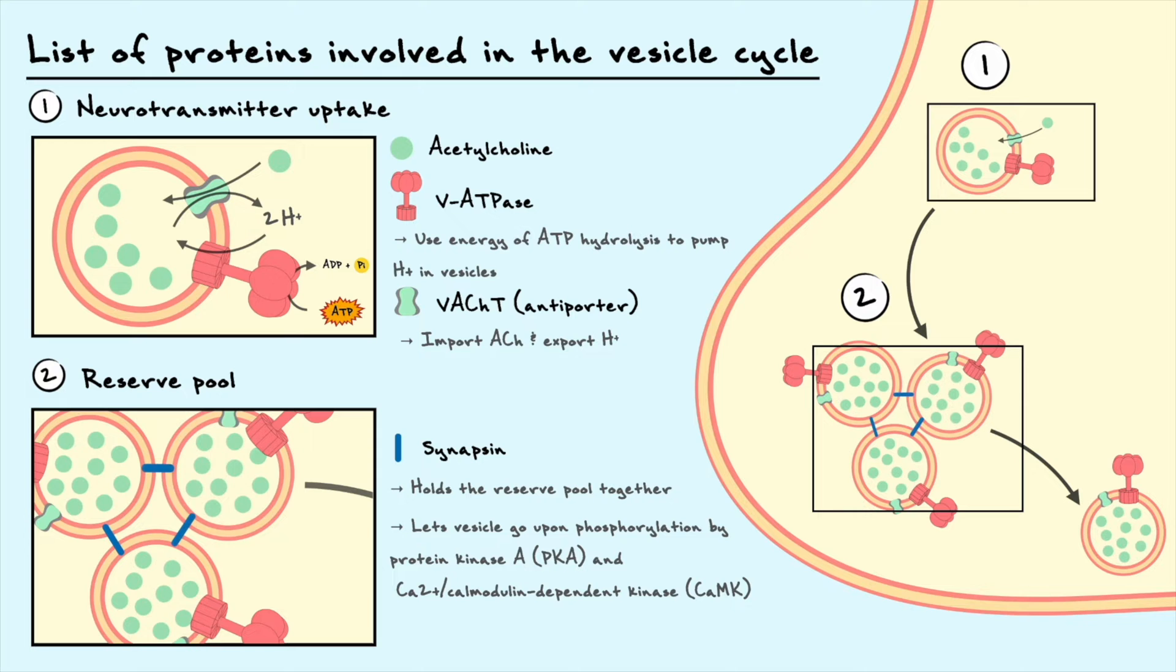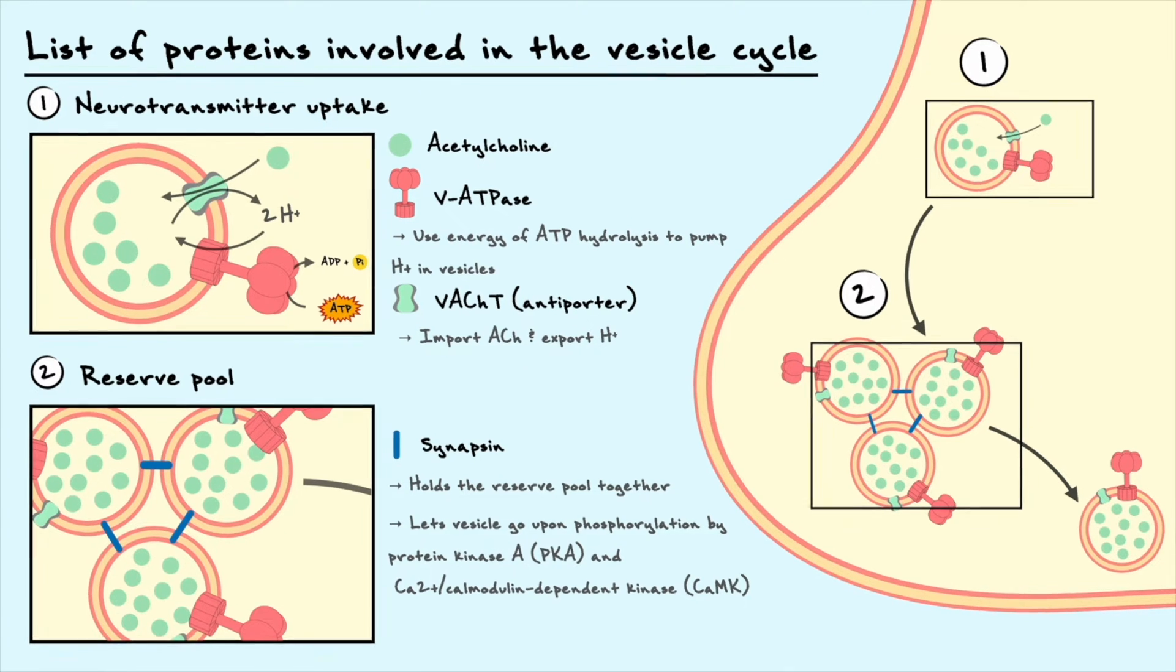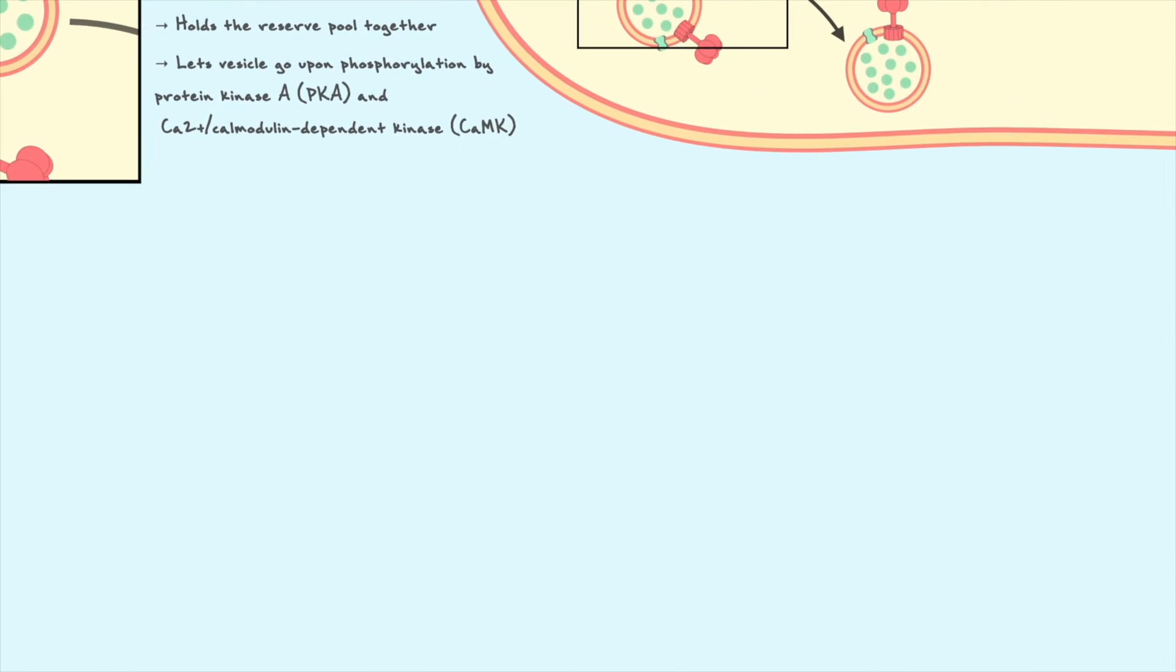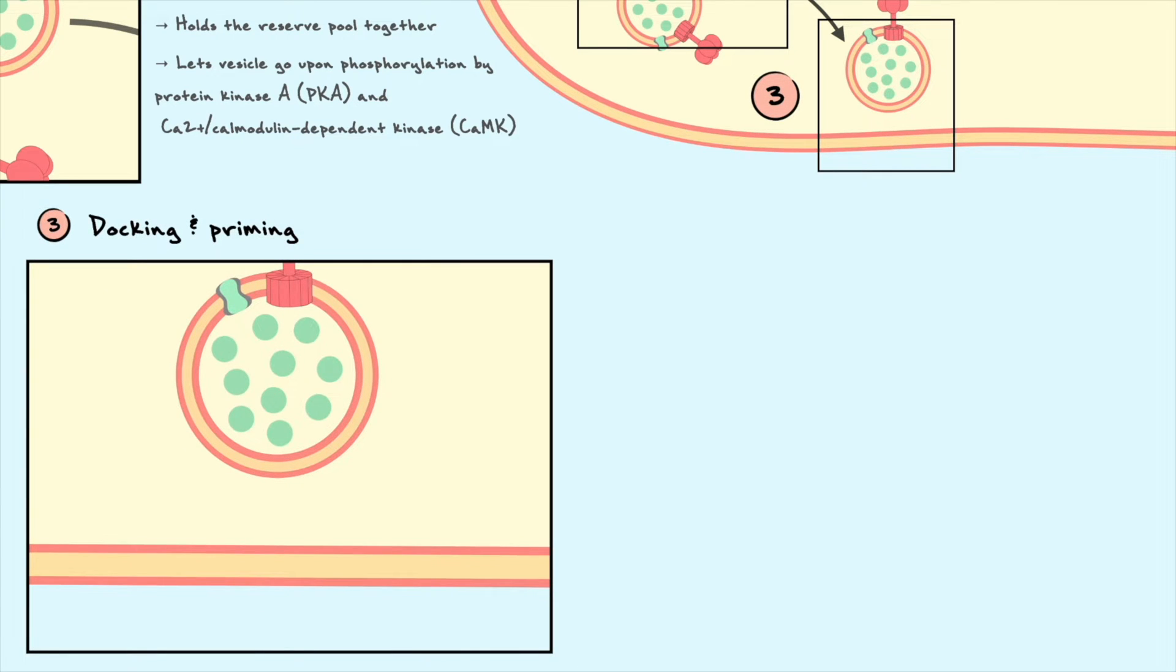The filled vesicles that move near the plasma membrane that are not held together at the reserve pool undergo docking and priming to the membrane. Given the stability of the plasma membrane, it takes a lot of energy to fuse the vesicles. To overcome this energy, vesicles form large protein complexes with the membrane.